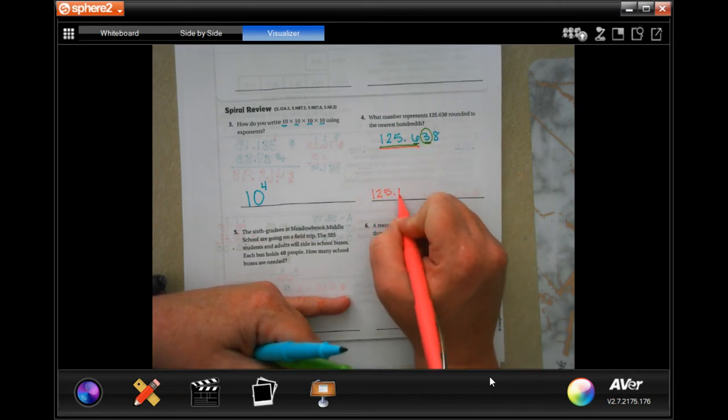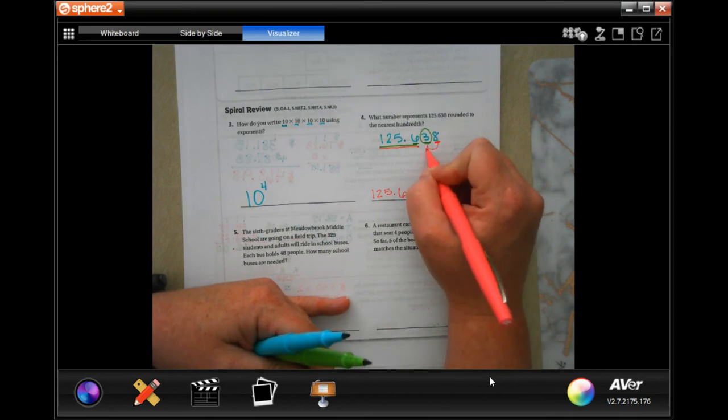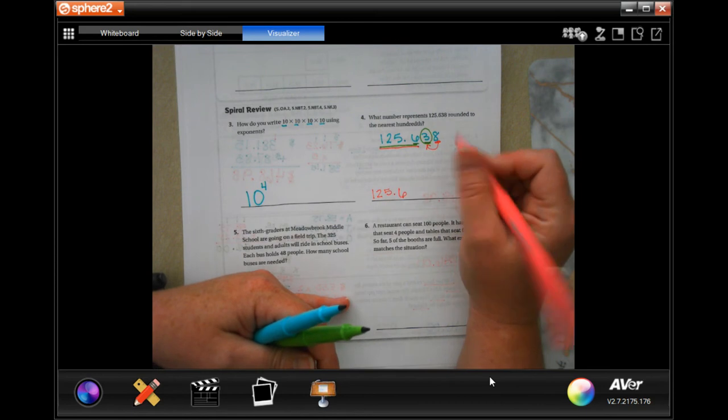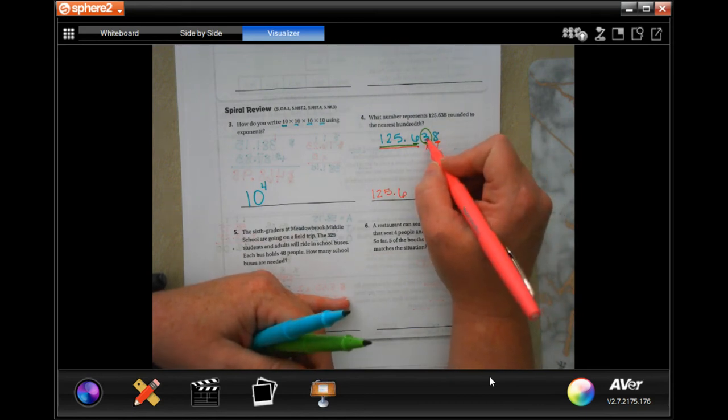All of these numbers stay the same, so we're still going to have 125.6. We just need to look at the 8 now and see if the 8 tells the 3 to go up or stay the same. Well, 8 is bigger than 5, so we need to bump that 3 up to a 4 and now we're done.